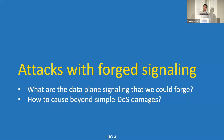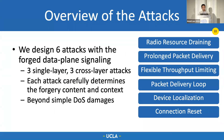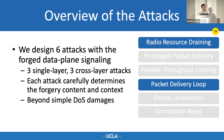With the forged message, what kind of damage can we cause? In this paper, we introduce six different attacks using four signaling messages. Each attack carefully designs the contents and context of the forgery to cause intended damages. Three attacks leverage forged signaling messages to cause damage in a single protocol, while three others cause damage across multiple protocols. In this talk, I will introduce one from each category.